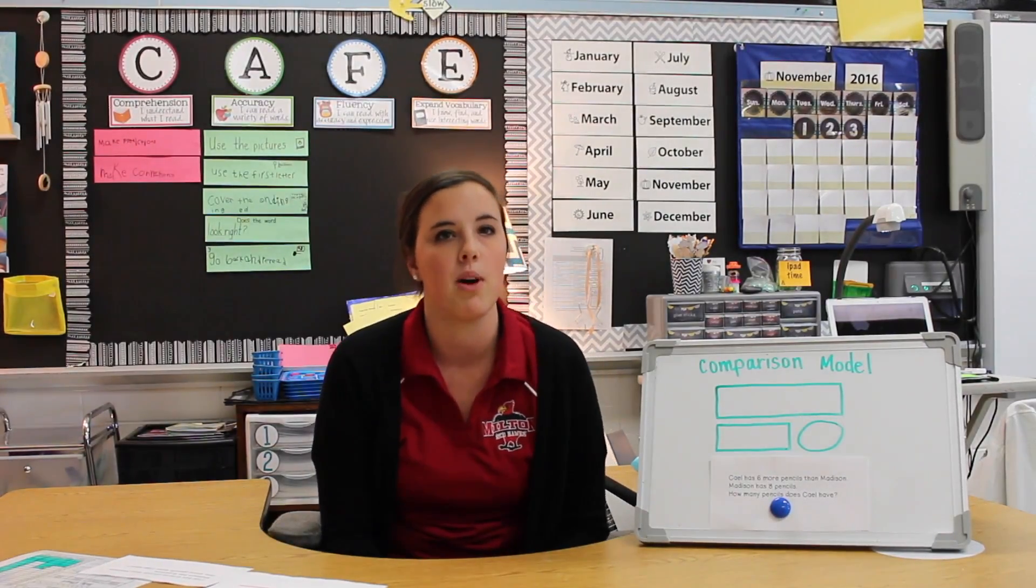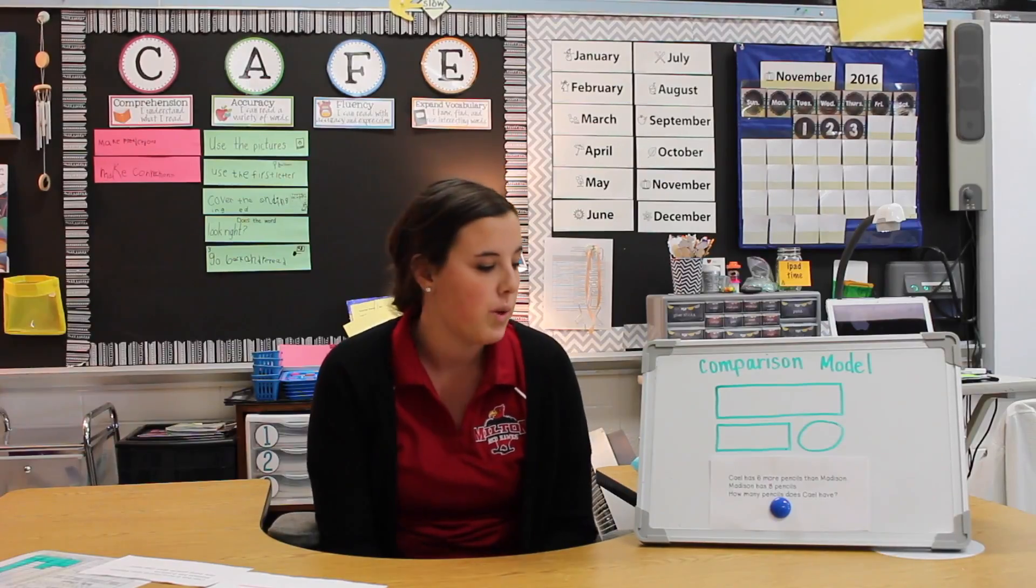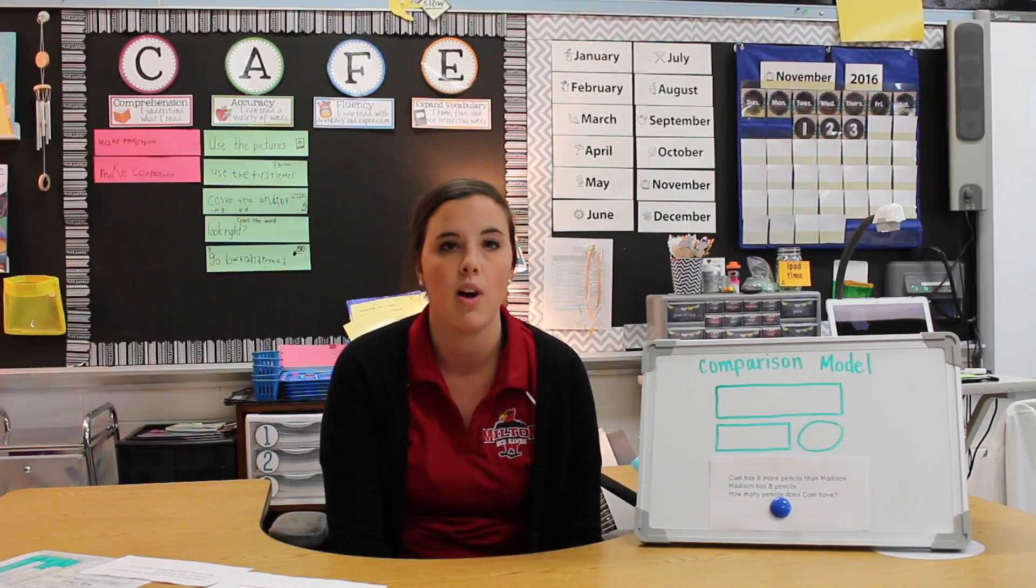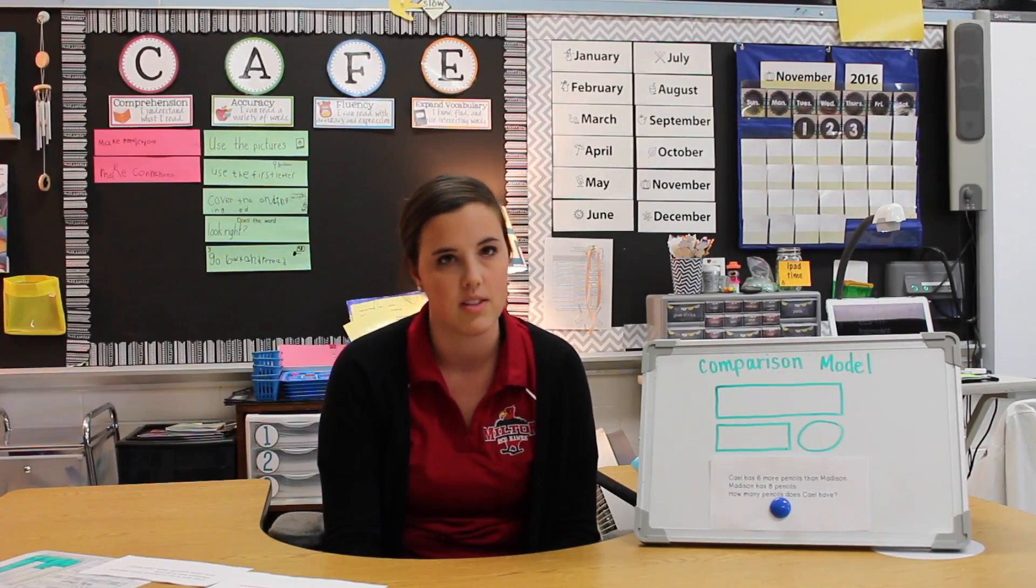The first thing students want to think about is what's happening in the story. We know that Madison has eight pencils but we don't know how many Cal has. But we do know that Cal has six more pencils than Madison.